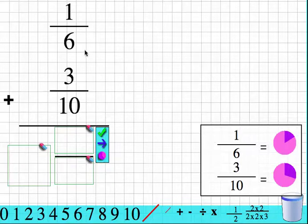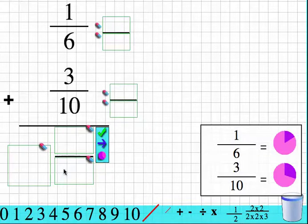So here's how I start. I have to find the least common denominator for 1 sixth and 3 tenths. I'm going to drag this little fraction next to each of the ones in the problem. The least common denominator is 30.